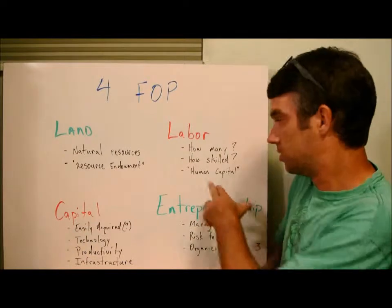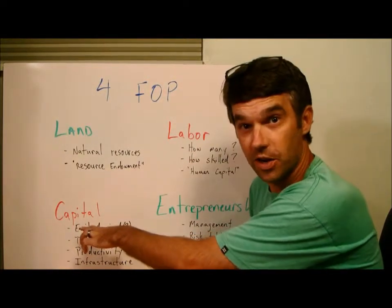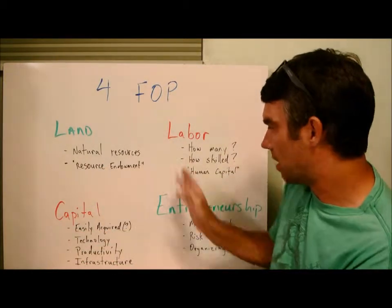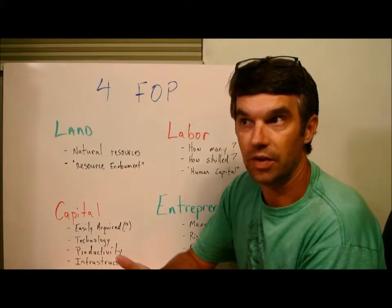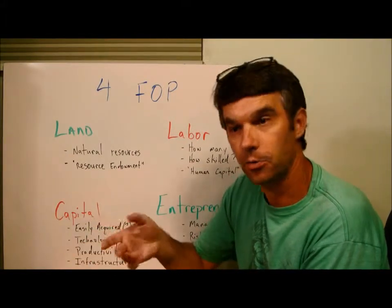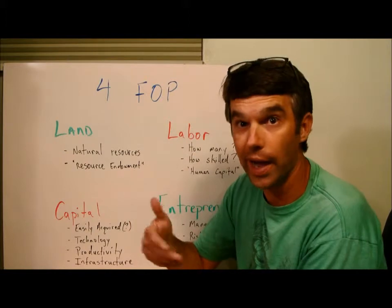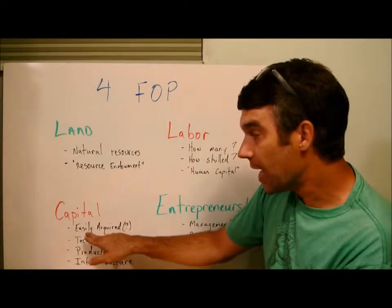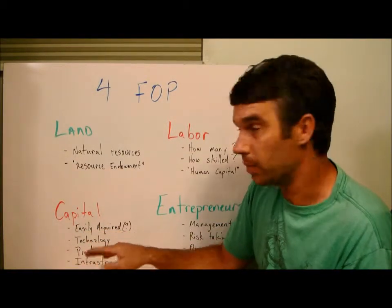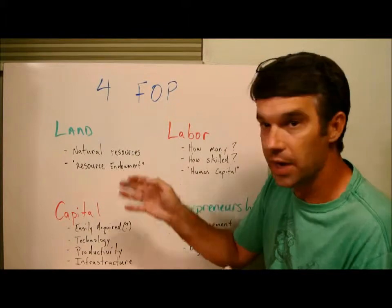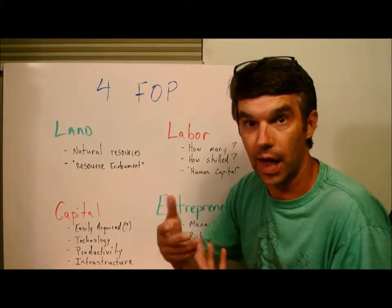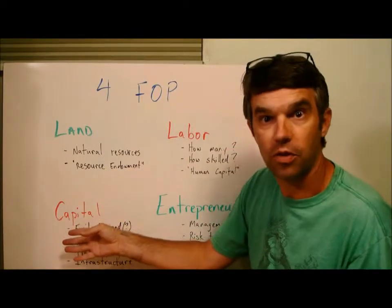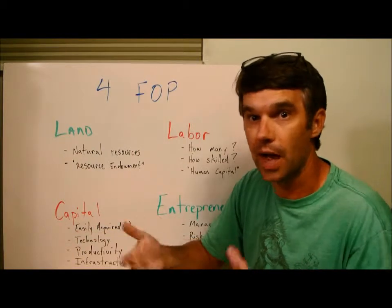For physical capital — and as soon as you start using the term human capital, you need to specify you're talking about physical capital over here. One important thing about it: of the three, it's the most easily acquired. If I need a tractor, I can just go buy a tractor, if I have the money and the technology exists. It is the most easily acquired because, unlike the other three, it is itself a product — it is something produced by some economy somewhere.